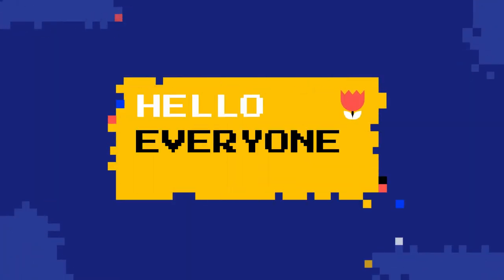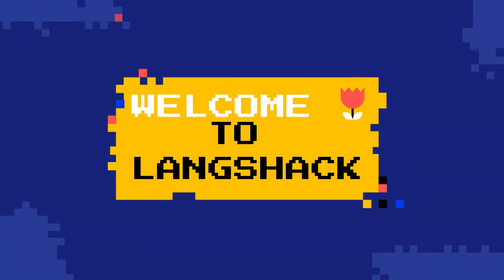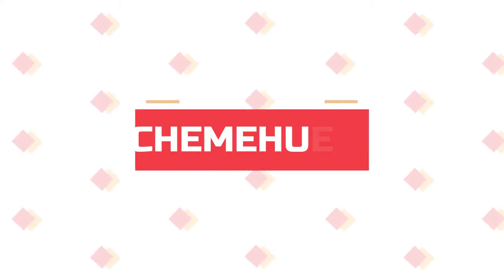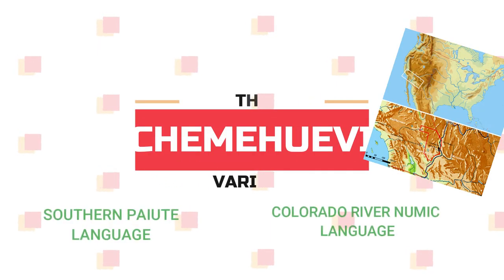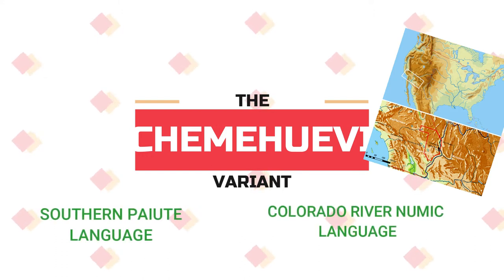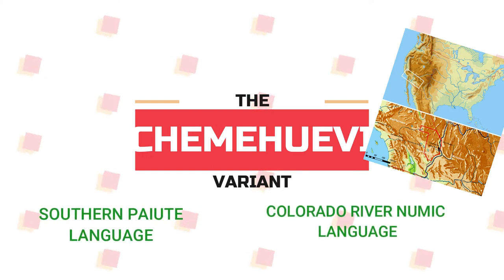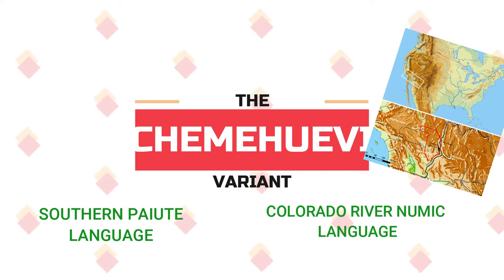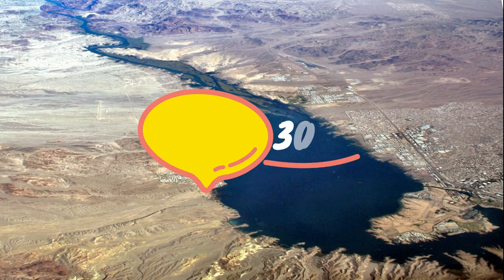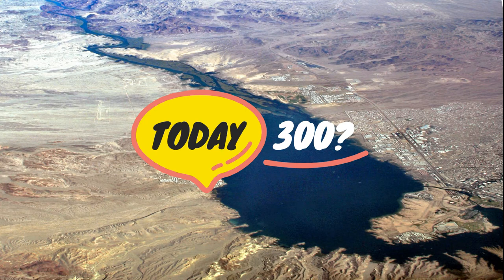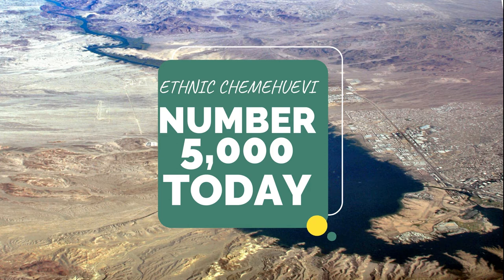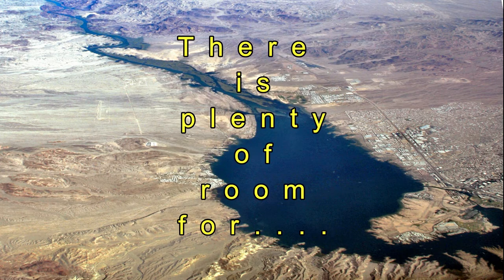Hello everyone and welcome to the Langshack. In this video we're going to be talking about the Chemehuevi variant of the Southern Paiute or Colorado River Numic language. It also goes by the name Uto-Chemehuevi and many other names. Today the Chemehuevi language numbers probably a few hundred speakers, however its ethnicity has 5,000 people, which means there is plenty of room for language expansion.